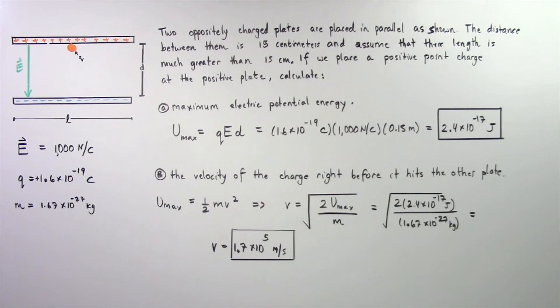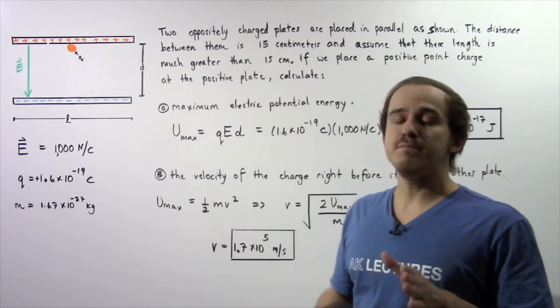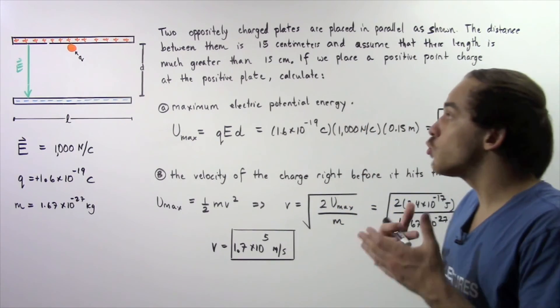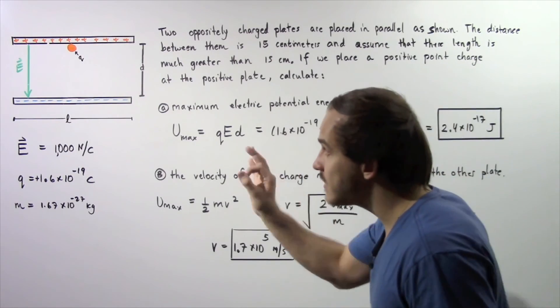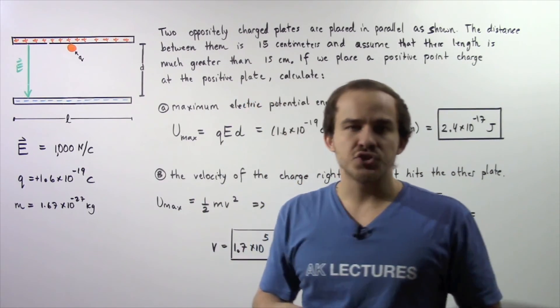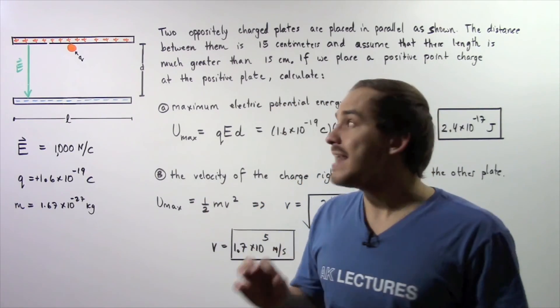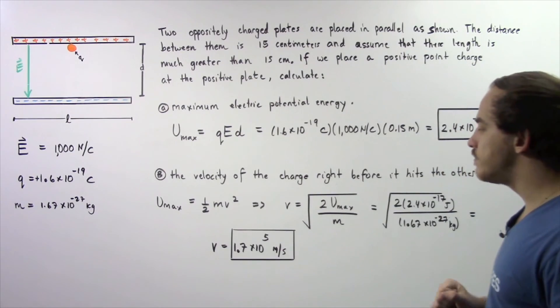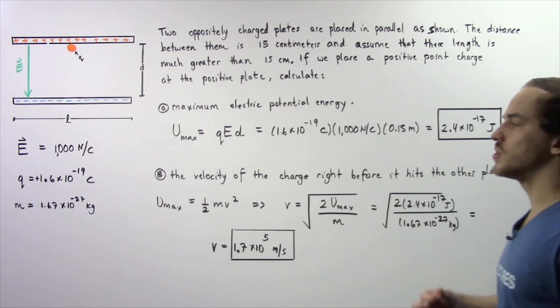We get a velocity of about 1.7 times 10 to the 5 meters per second. Right before our electric charge hits the negatively charged plate, all of that electric potential energy has been transformed into kinetic energy, and its velocity is given by 1.7 times 10 to the 5 meters per second.